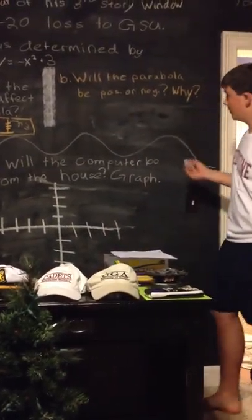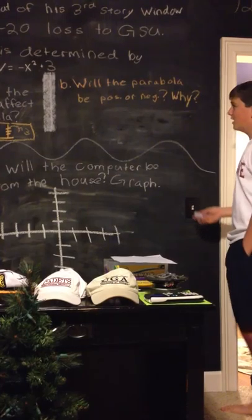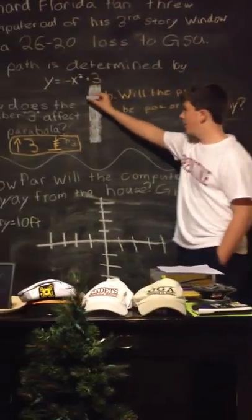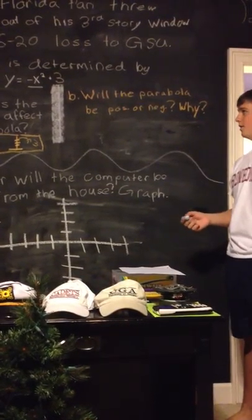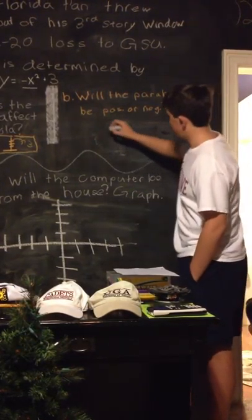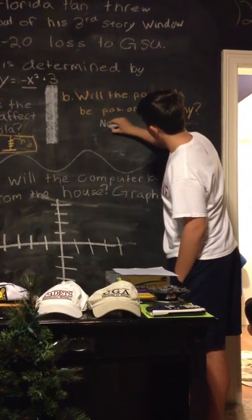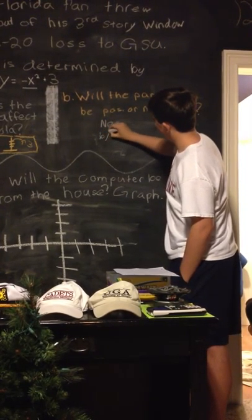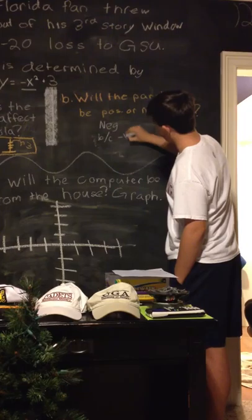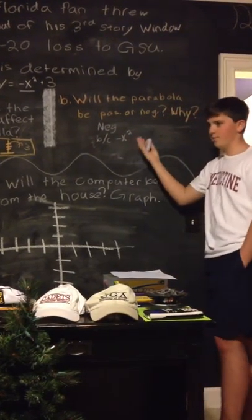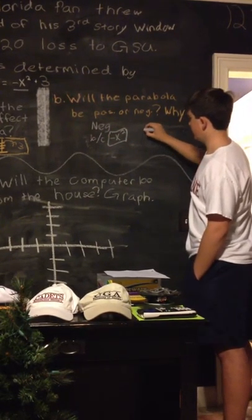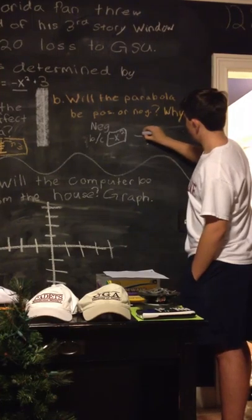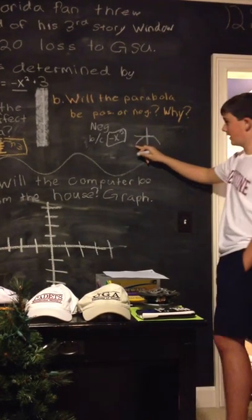For part b, the question is: will the parabola be positive or negative, and why? It's going to be negative because of the negative x squared right there. Because if there's a negative in a parabola equation, then the parabola's going to be negative. So if it was positive, it'd be positive of course. And that's a negative parabola.